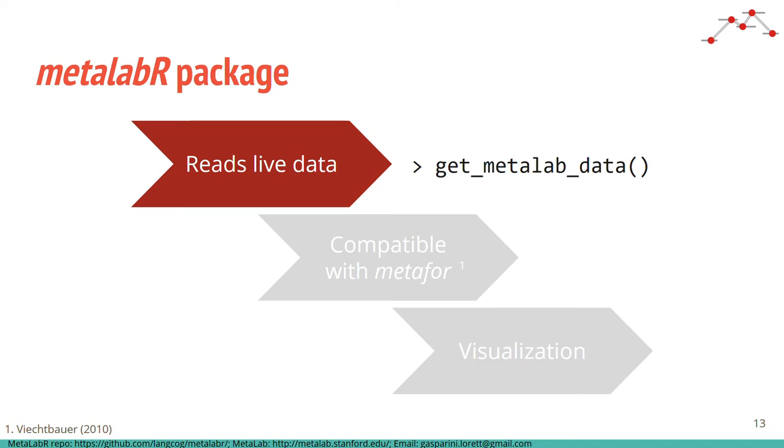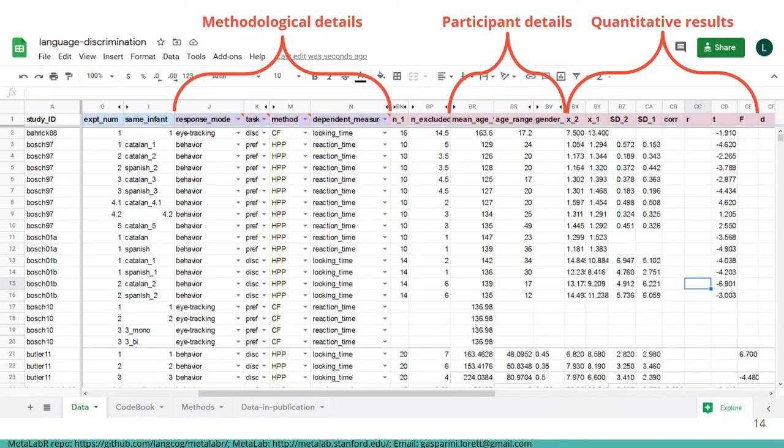So first, the process of reading the data. To give you a sense of the data curation process, the user conducting a meta-analysis extracts data from studies into this MetaLab spreadsheet, which has standardized column names regarding methodological details, participant details, and the quantitative results for calculating effect sizes.